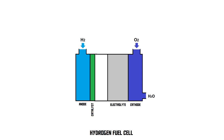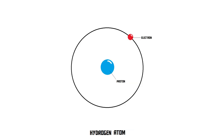The electrolyte is a material that only lets positively charged things get through it. Hydrogen is not positive. Hydrogen atoms consist of one proton and one electron — one positive particle and one negative particle — which makes the overall particle neutral. So the hydrogen in our system is neutral and not positive, so it cannot get through the electrolyte.